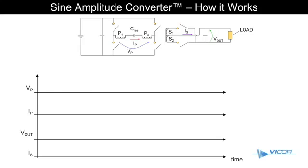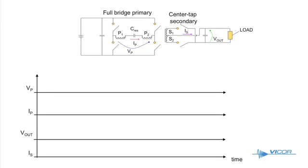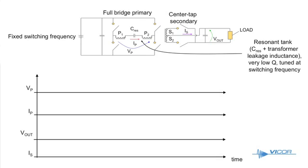The Sign Amplitude Converter is a transformer-based series resonant topology. One possible implementation consists of a full-bridge primary stage and center-tapped rectifier output stage. The primary stage switches at a fixed frequency, while the resonant tank with very low Q is tuned right at the switching frequency.